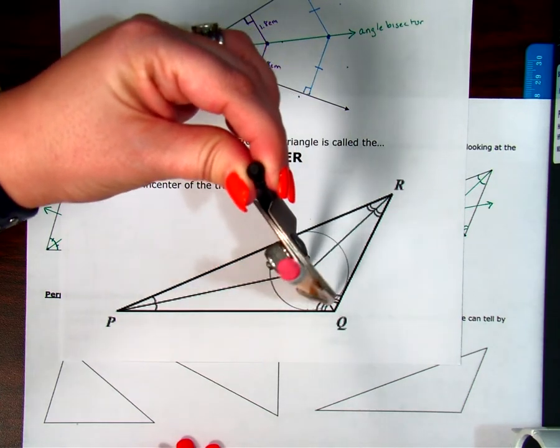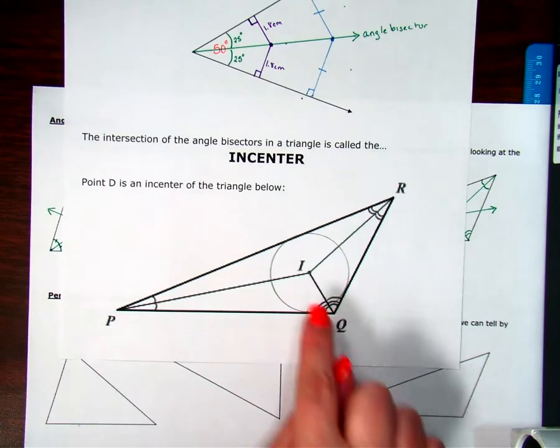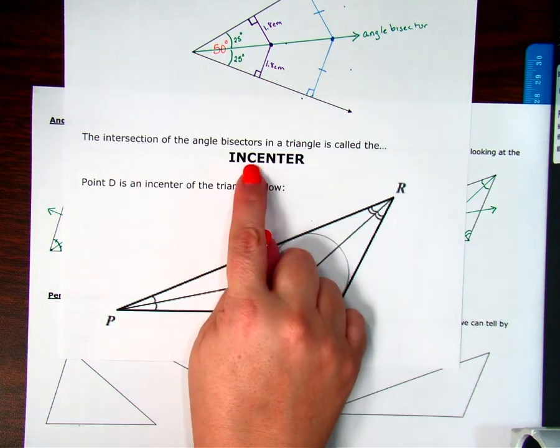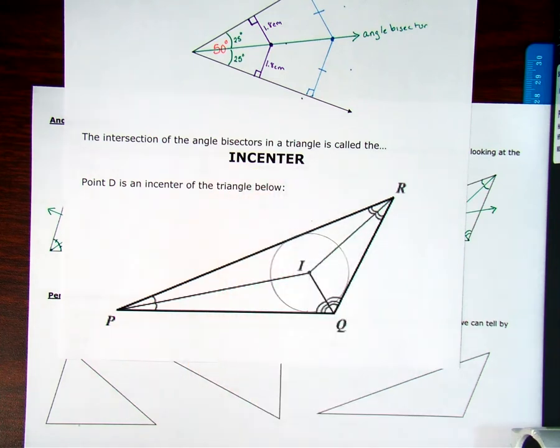the circle will hit each side exactly as I go around. The circle is the same distance from each side. So the circle we say that's inscribed inside the triangle. So we call it the incenter because it's the center of the circle that's inside the triangle.